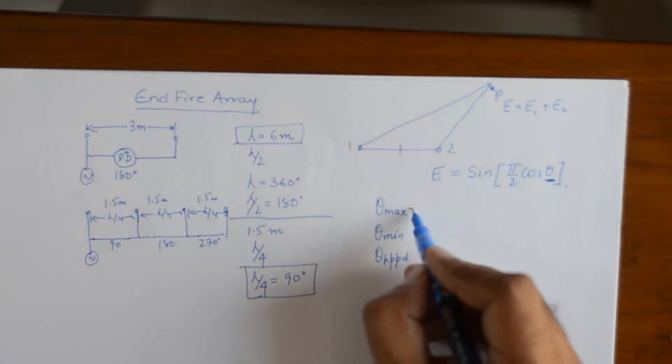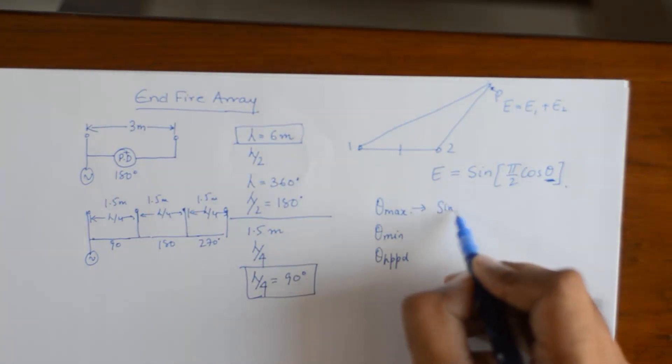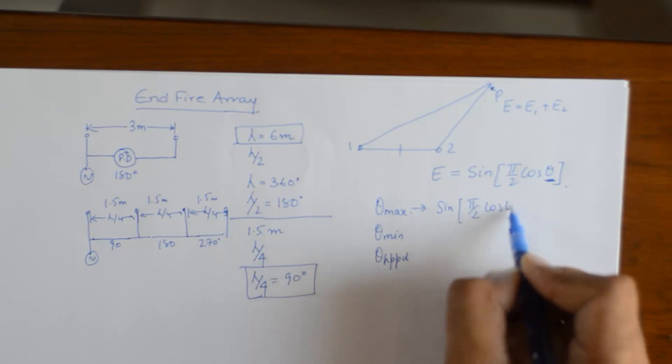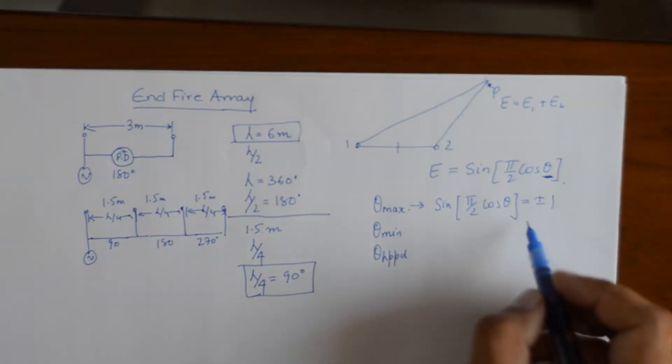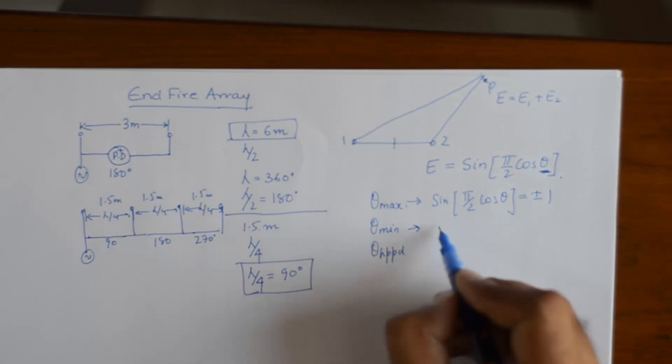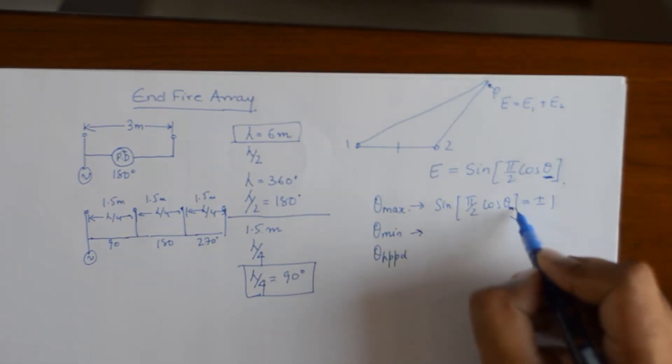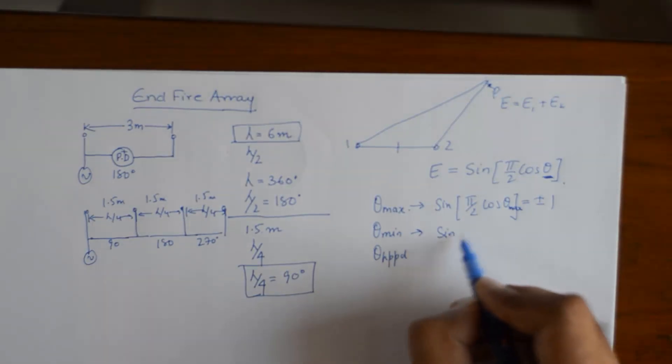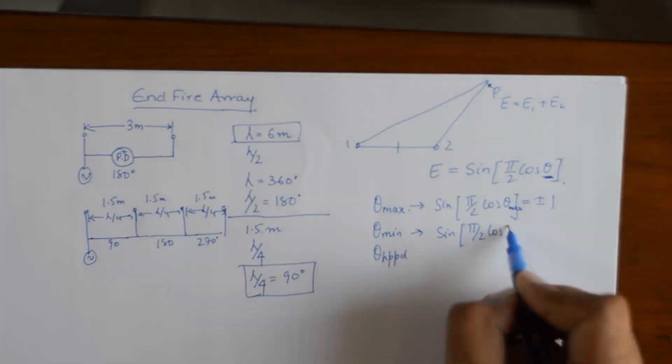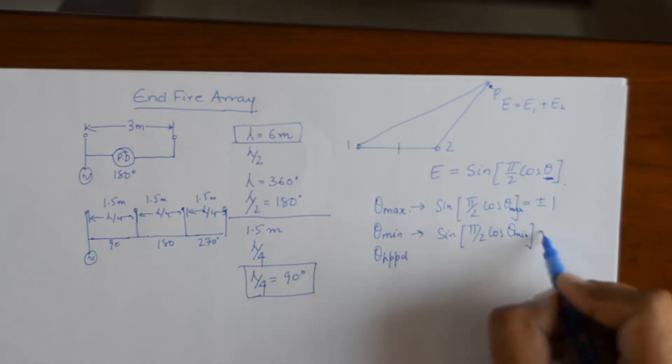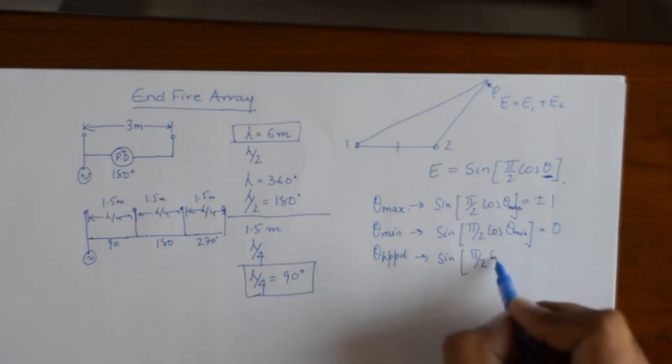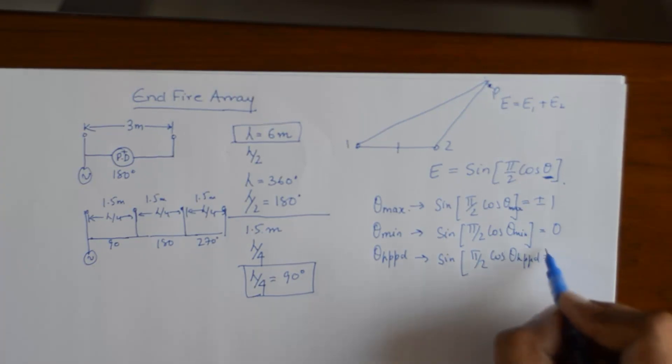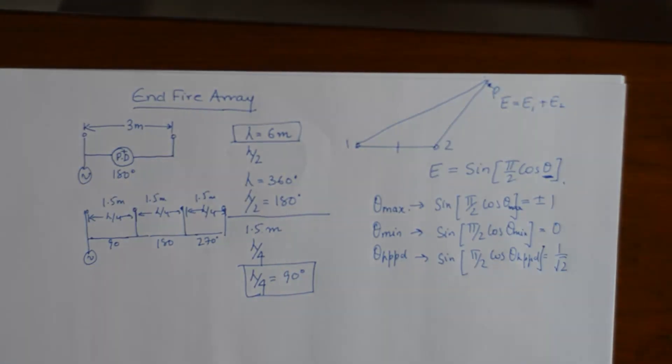Theta max is found out by putting this thing equal to plus minus 1 because the maximum value that sine can take is plus minus 1. Theta min is found out using putting the value 0 and theta HPPD is found out using equal to 1 by root 2 because we are talking in terms of electric field intensity not in terms of power. So electric field intensity is proportional to square root of power.